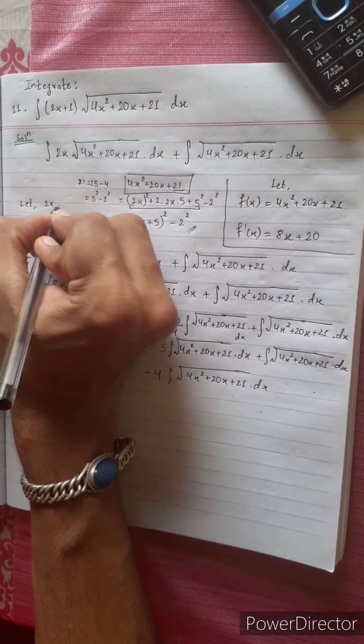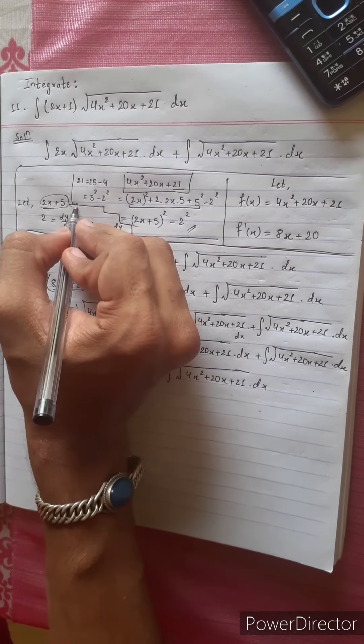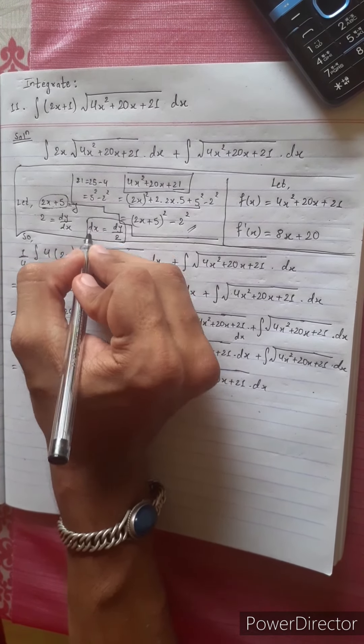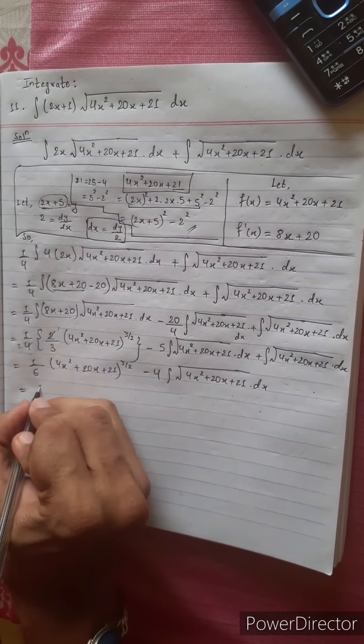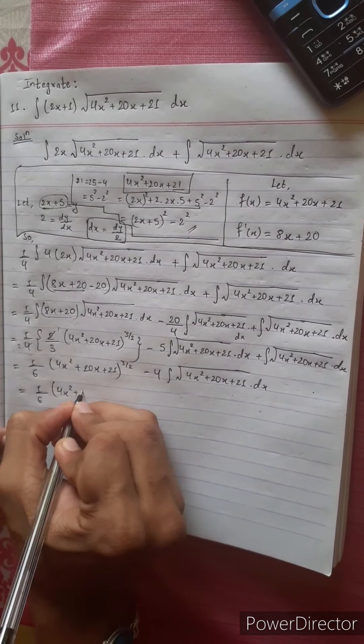Let 2x plus 5 equal y. Then 2 equals dy/dx, so dx equals dy/2. This is the substitution: 2x plus 5 is the derivative and dy/dx is the differentiation. So dx equals dy/2. This gives us the answer: 4x squared plus 20x plus 21 to the power 3/2.